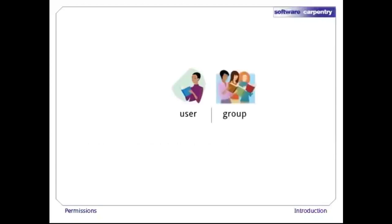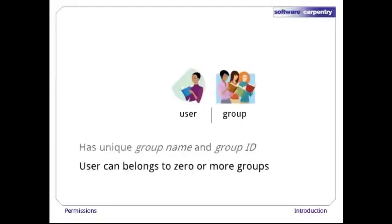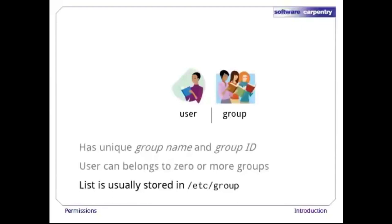Computers also manage groups. Each group has a unique group name and numeric group ID. The system administrator, or anyone with equally godlike powers, can put a user in any number of groups. The list of who's in what group is usually stored in the file /etc/group. If you're in front of a Unix machine right now, or are using Windows and have Cygwin installed, take a moment and have a look at that file.